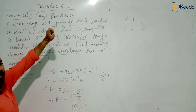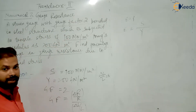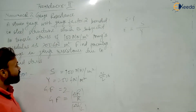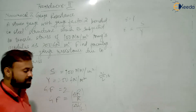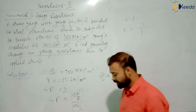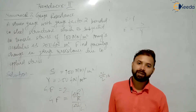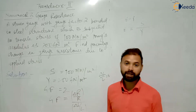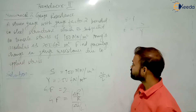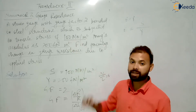A strain gauge with gauge factor 2 is bonded to a steel structure which is subjected to tensile stress of 100 MN per m². Young's modulus is 200 GN per m². You have to find the percentage change in gauge resistance due to the applied stress of 100 MN per m².